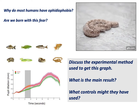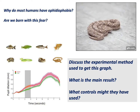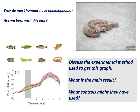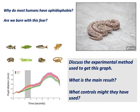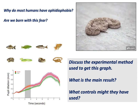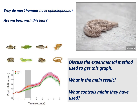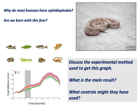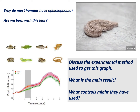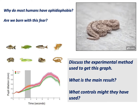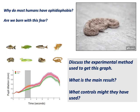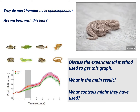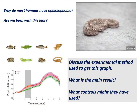The graph looks at the dilation of the pupils in response to images, and the images are located above. So think about this graph — how do you think this experiment went down? What do you think the method was they were trying to figure out, and what do you think they found? Think about the sort of controls they would have to use to study something like this. It has to do with ophidiophobia.